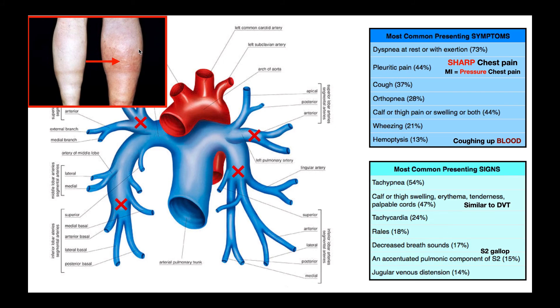If a person has a pulmonary embolism, they likely also have a deep vein thrombosis — a piece of it broke off and traveled to the lungs. So if they have these DVT signs, you do need to be worried about a pulmonary embolism.